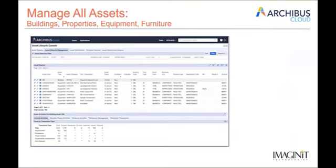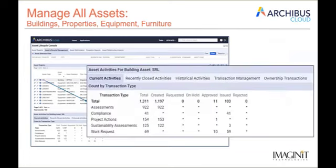Archibus asset management is really a comprehensive view of all your physical assets, starting with the buildings, the properties they reside on, and the more traditional equipment — boilers, chillers, pumps, motors, assembly equipment, office equipment, PCs — and of course furniture: desks, tables, chairs, cabinets, bookcases, etc. It's a pretty broad spectrum of requirements, and Archibus helps collect all of that information in one place. You get to decide which of those elements you want to track.